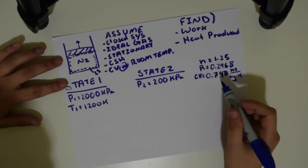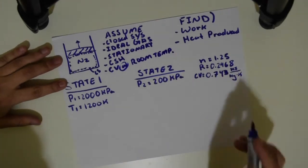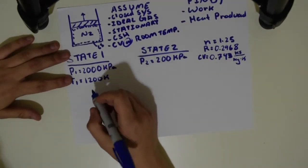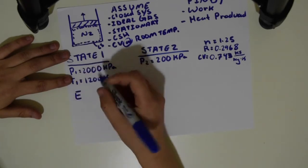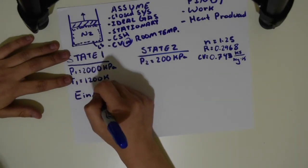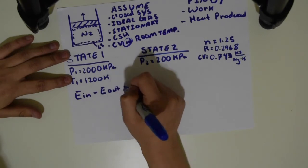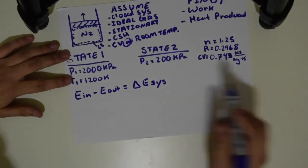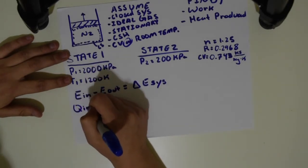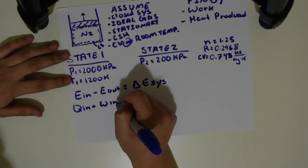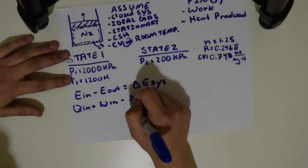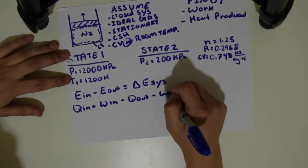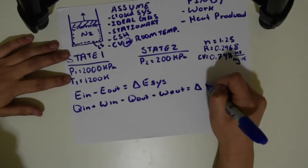The first thing you do, as I always say, is use the energy balance. This is a closed system, so we use the closed system energy balance. That's written as E-in minus E-out equals change in E of the system. Writing in all the terms: Q-in plus work-in minus Q-out minus work-out equals change in U plus change in KE plus change in PE.